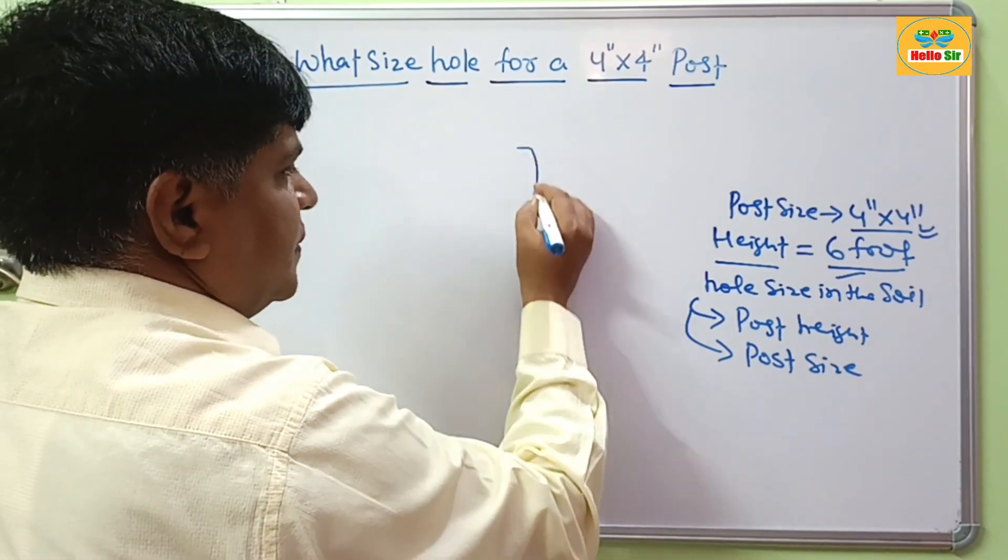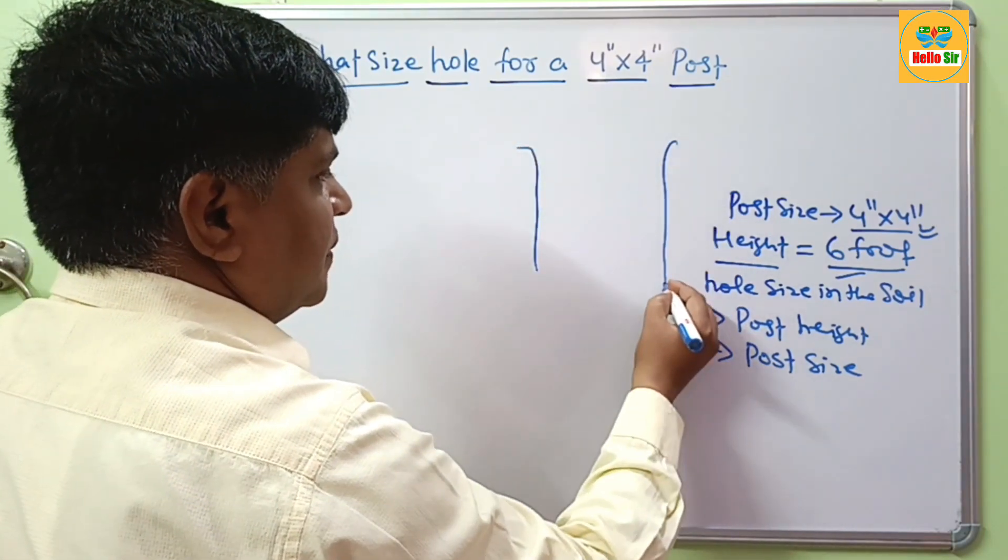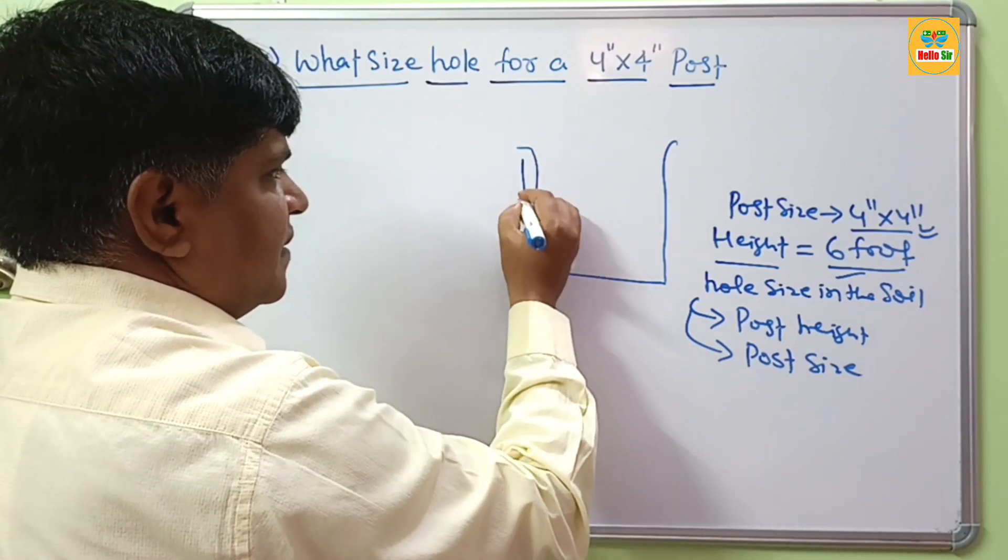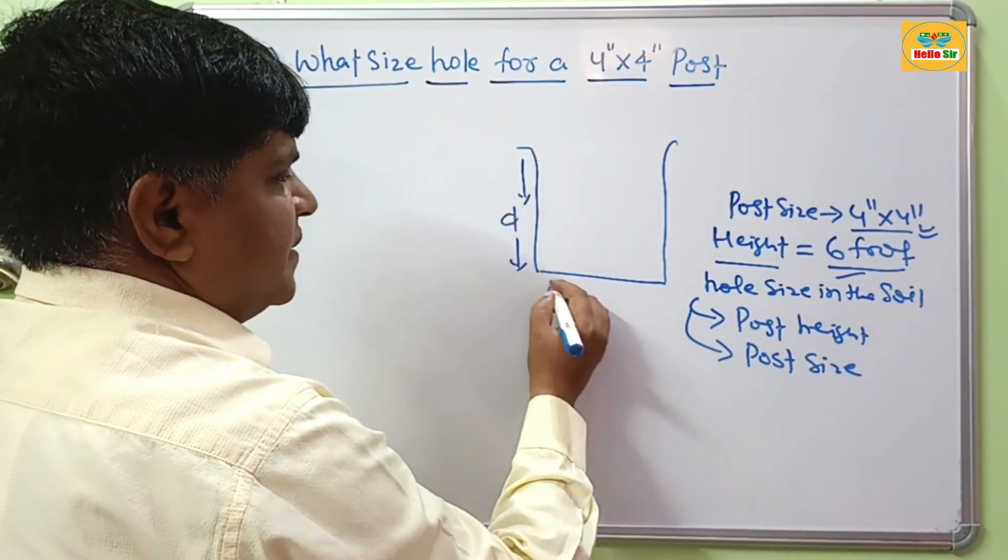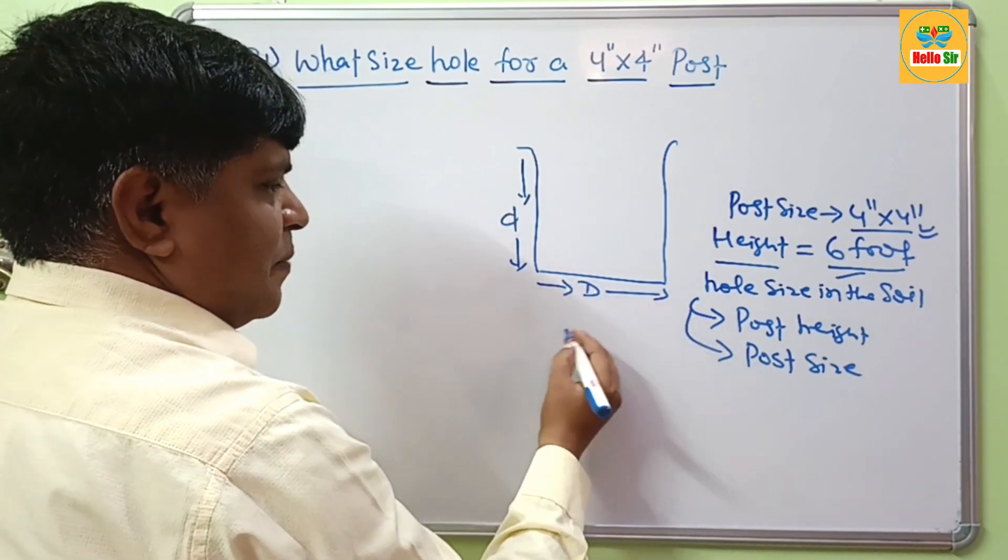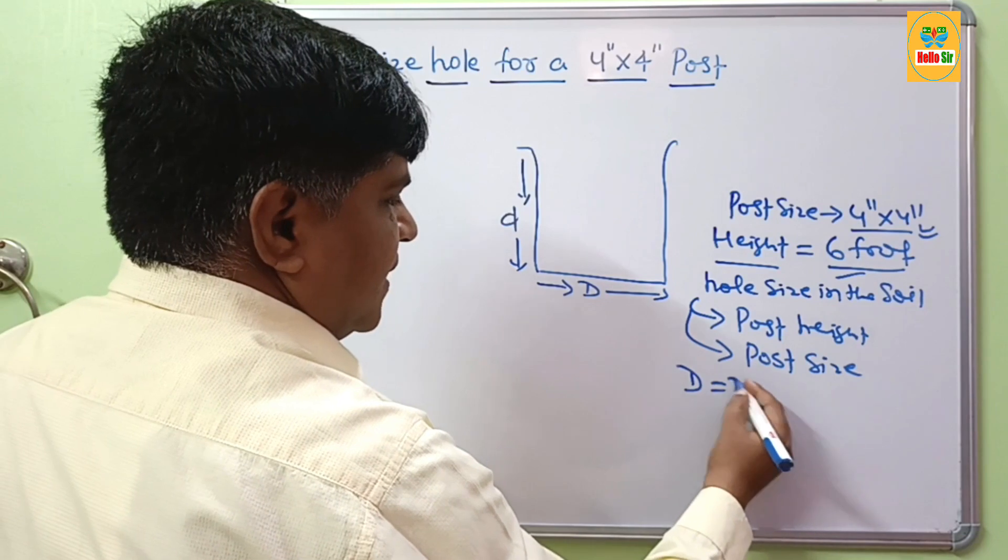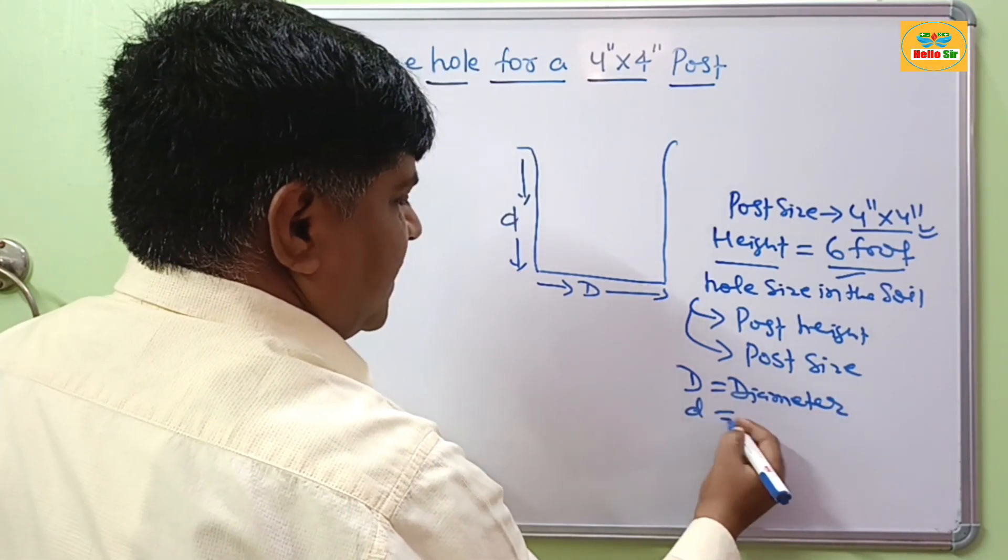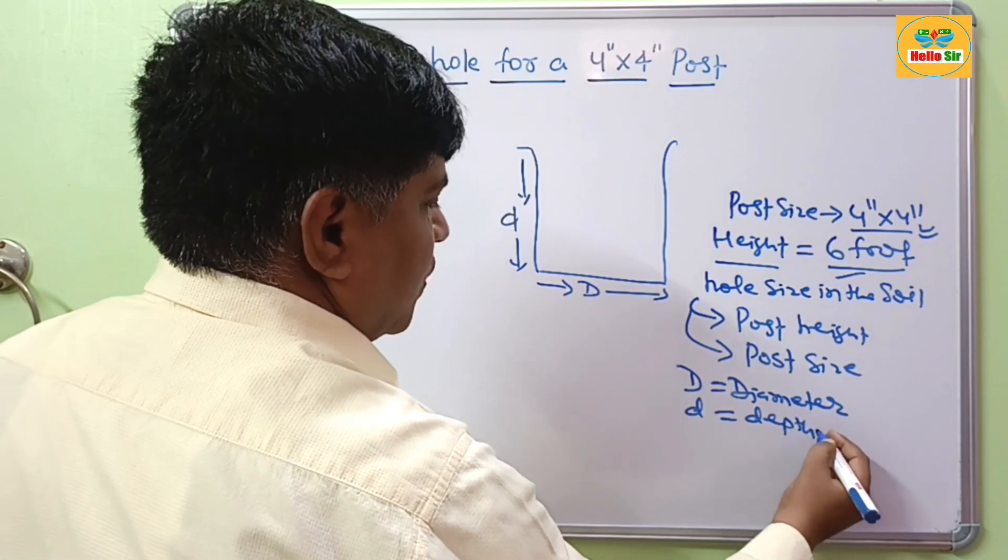Suppose you have this hole. This one is their depth and this one is their diameter. D is diameter of the hole and small d is the depth of hole.